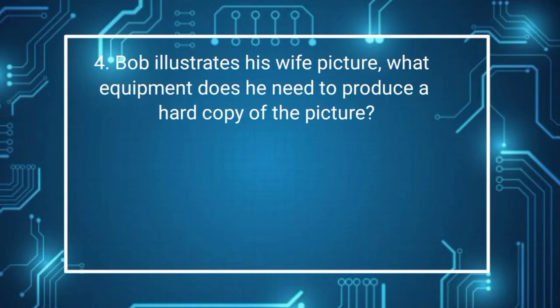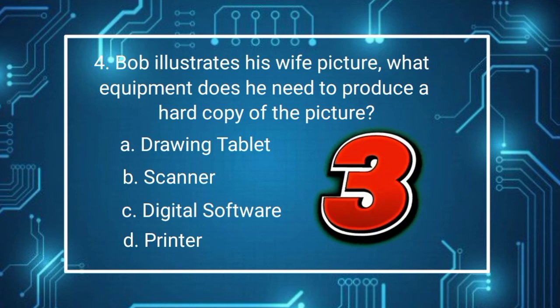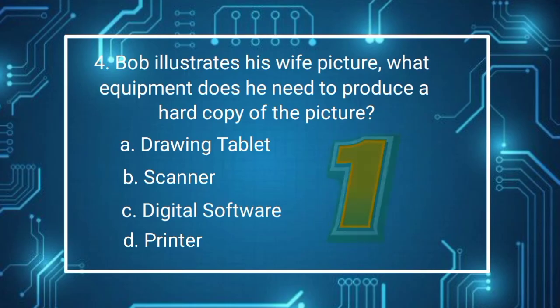Question number 4. Bob illustrates his wife's picture. What equipment does he need to produce hard copy of the picture? A. Drawing tablet B. Scanner C. Digital software D. Printer. 3, 2, 1, GO! You are right if your answer is letter D.